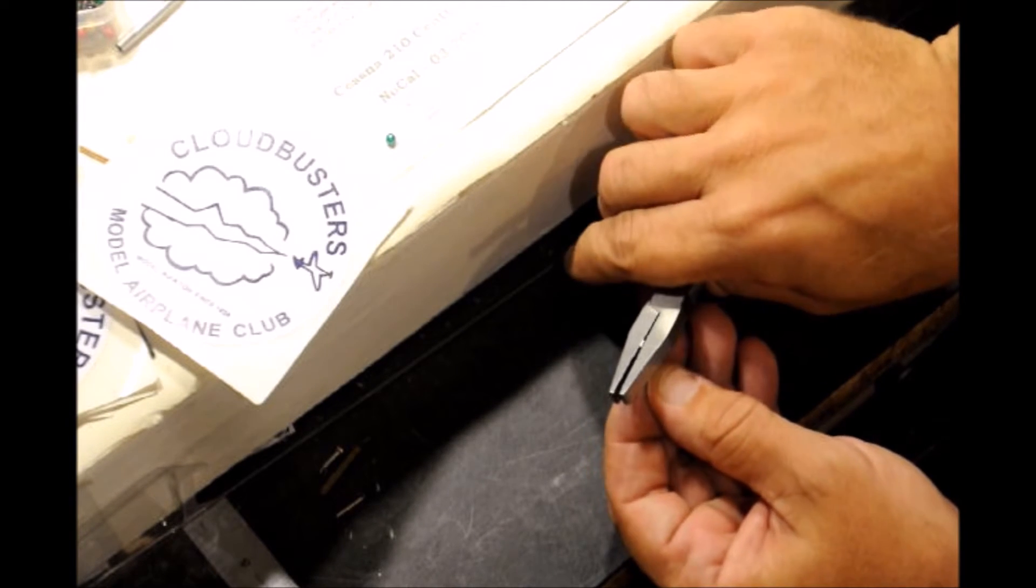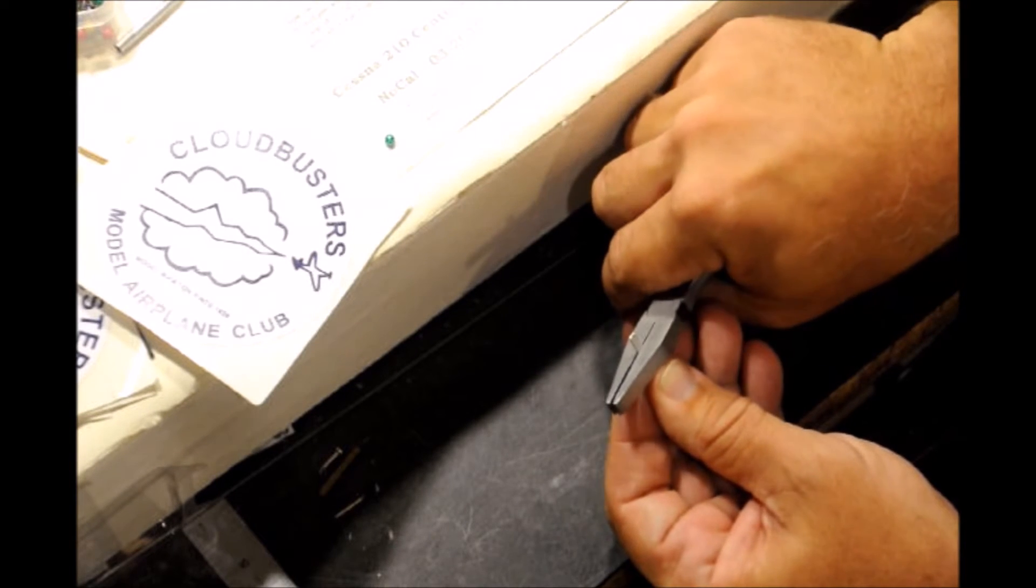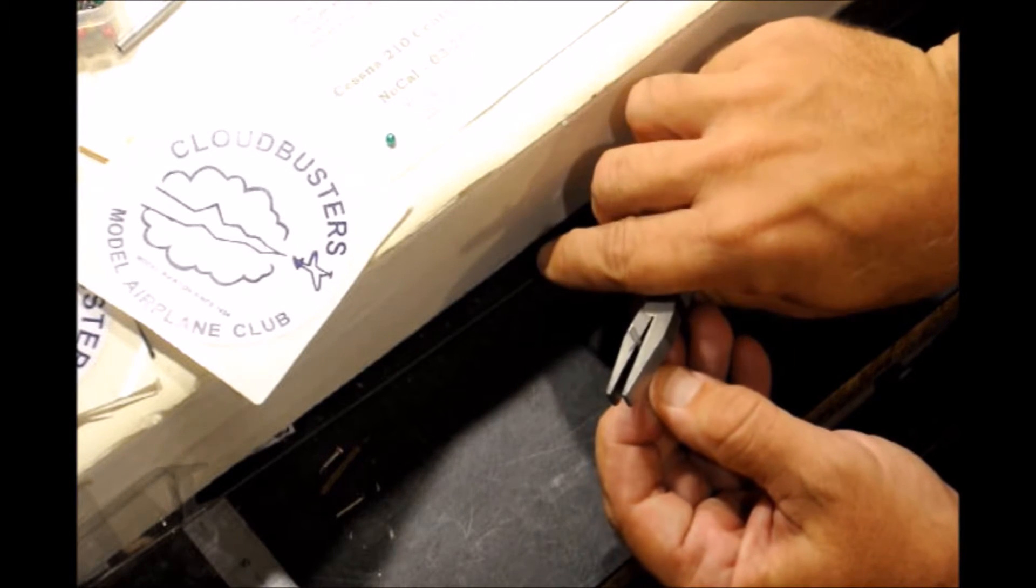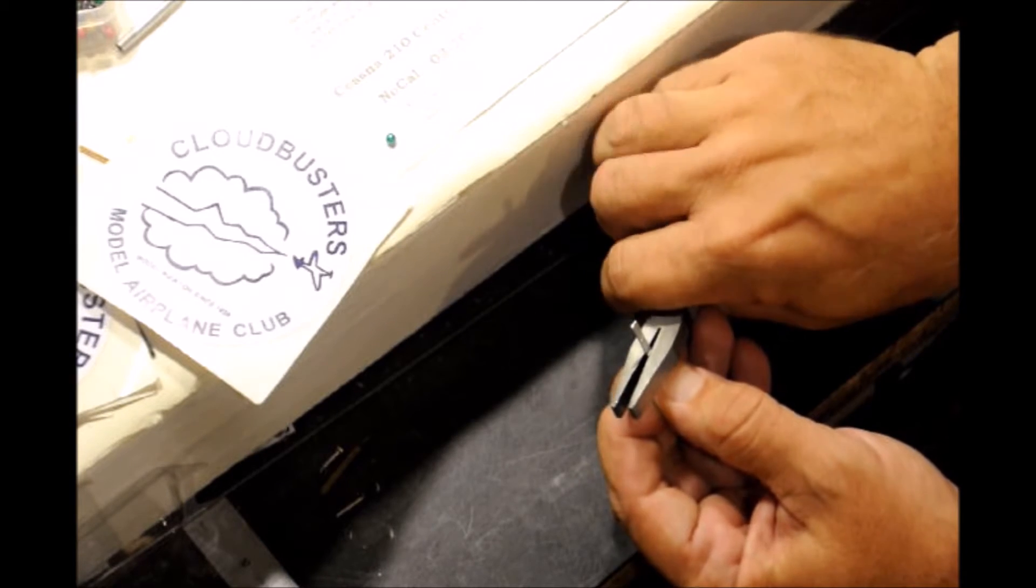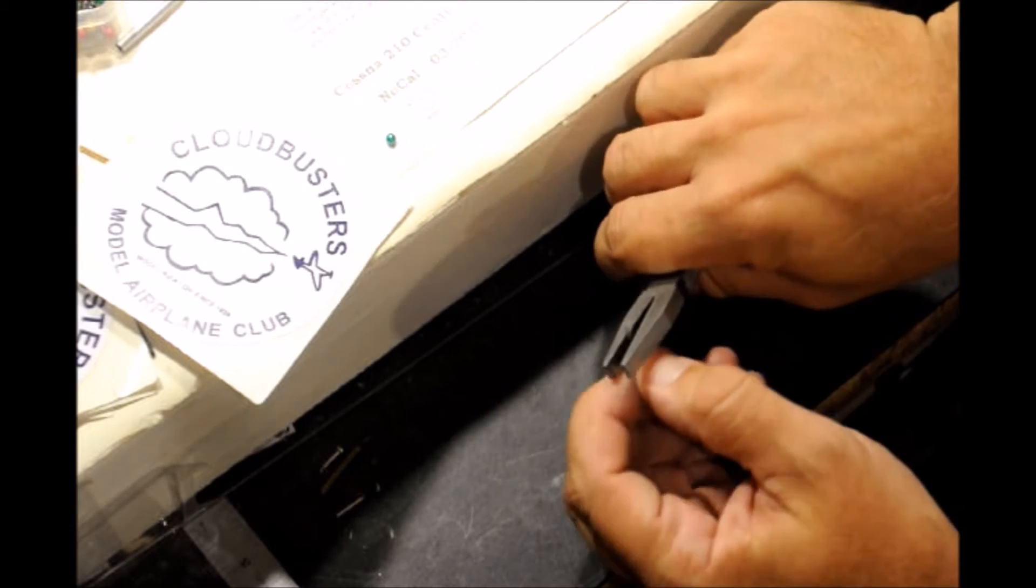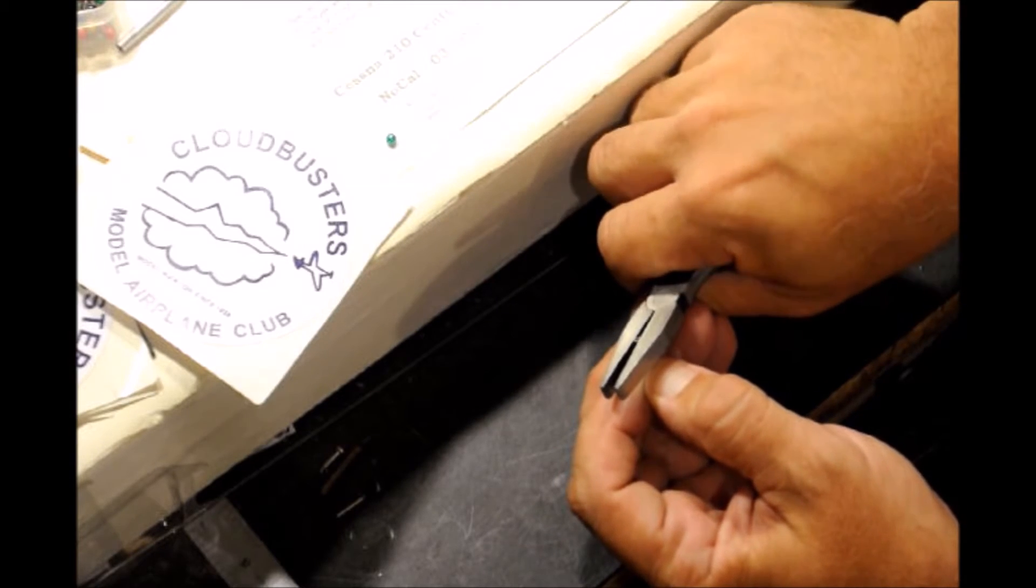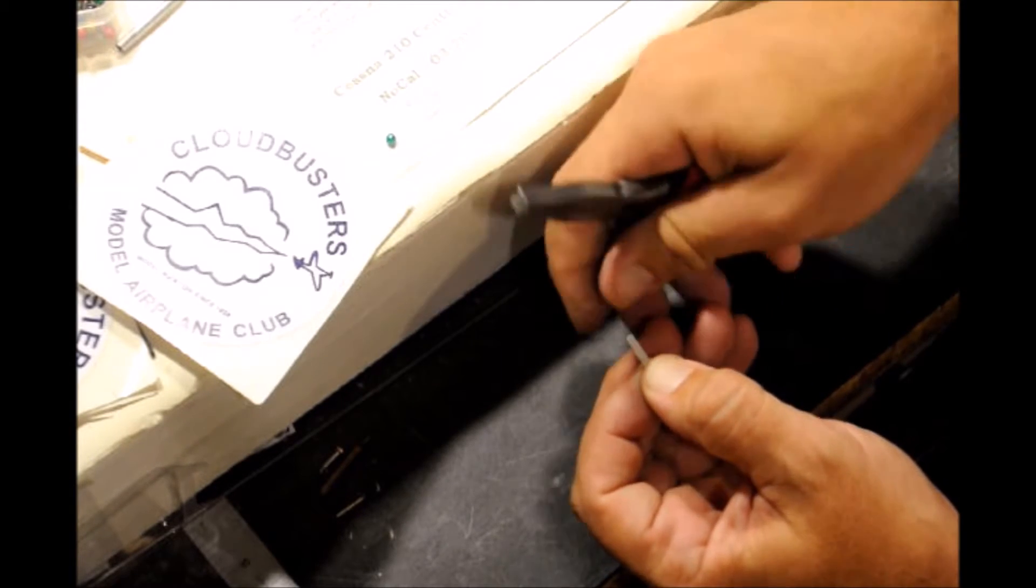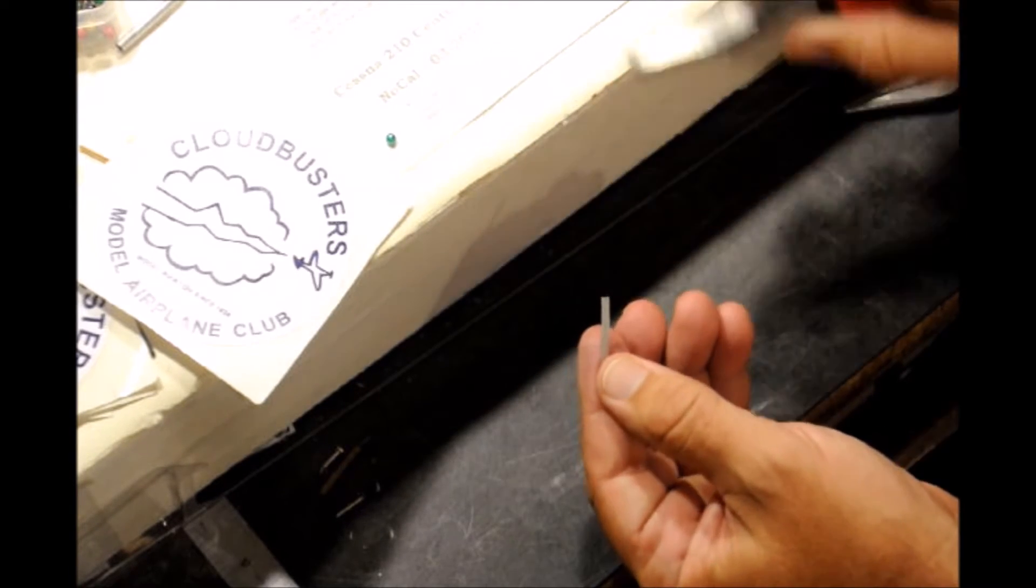You just put it in there, squeeze, move to the next spot, squeeze, flip it around so you can do the last tail end of it and squeeze. And there you have a nice flattened tubing.